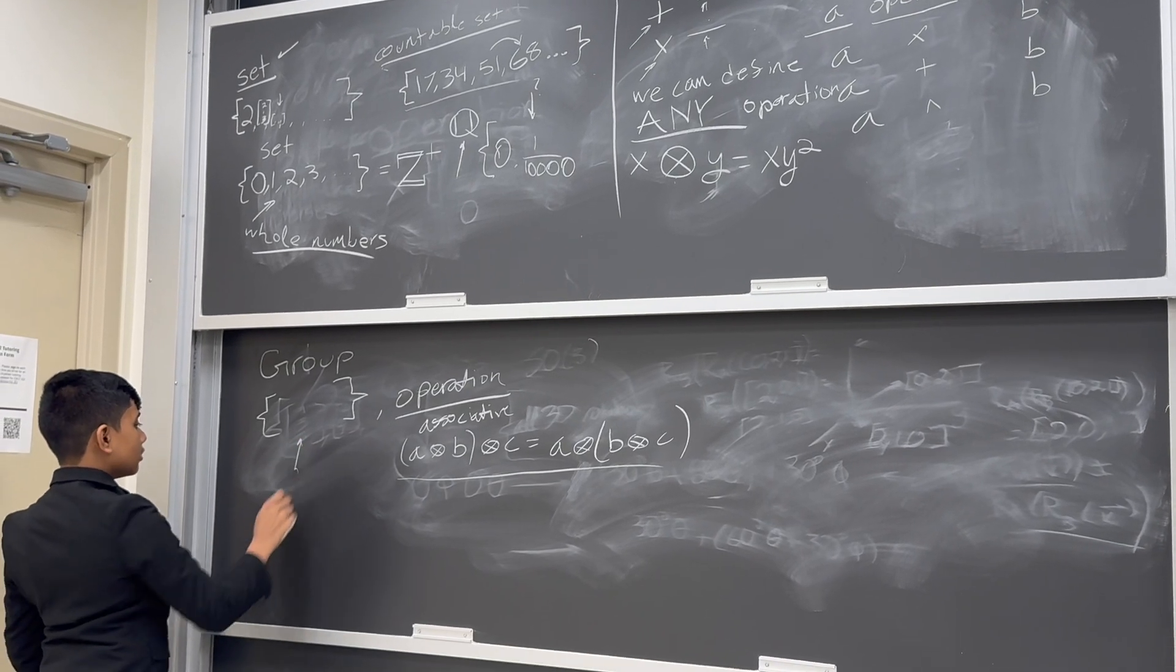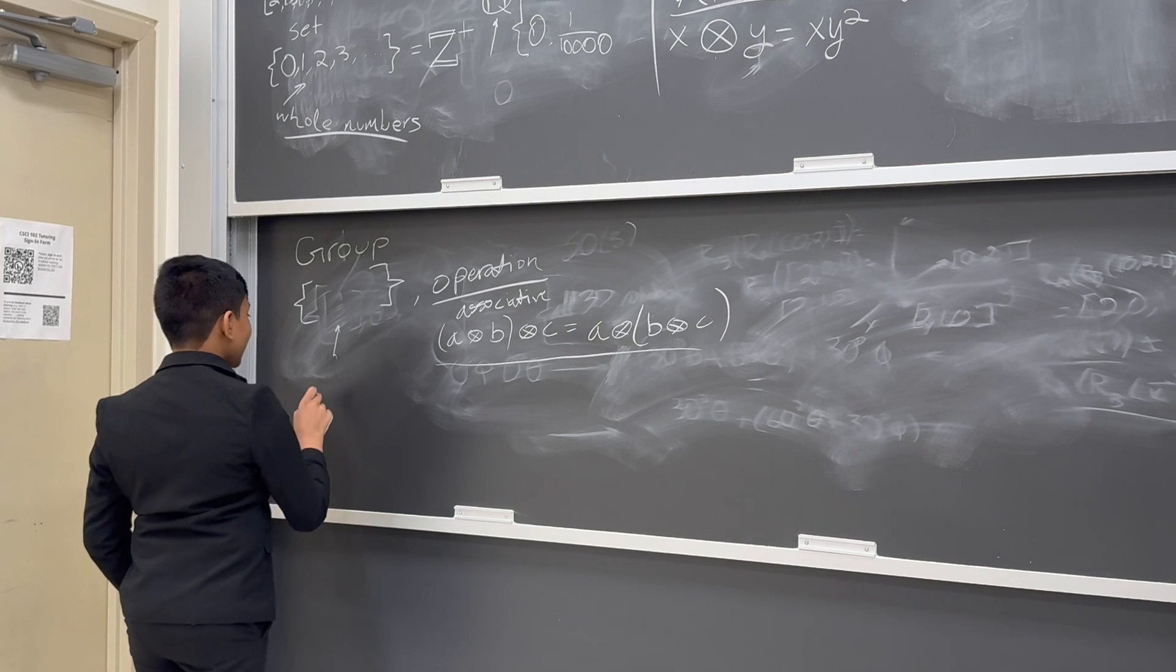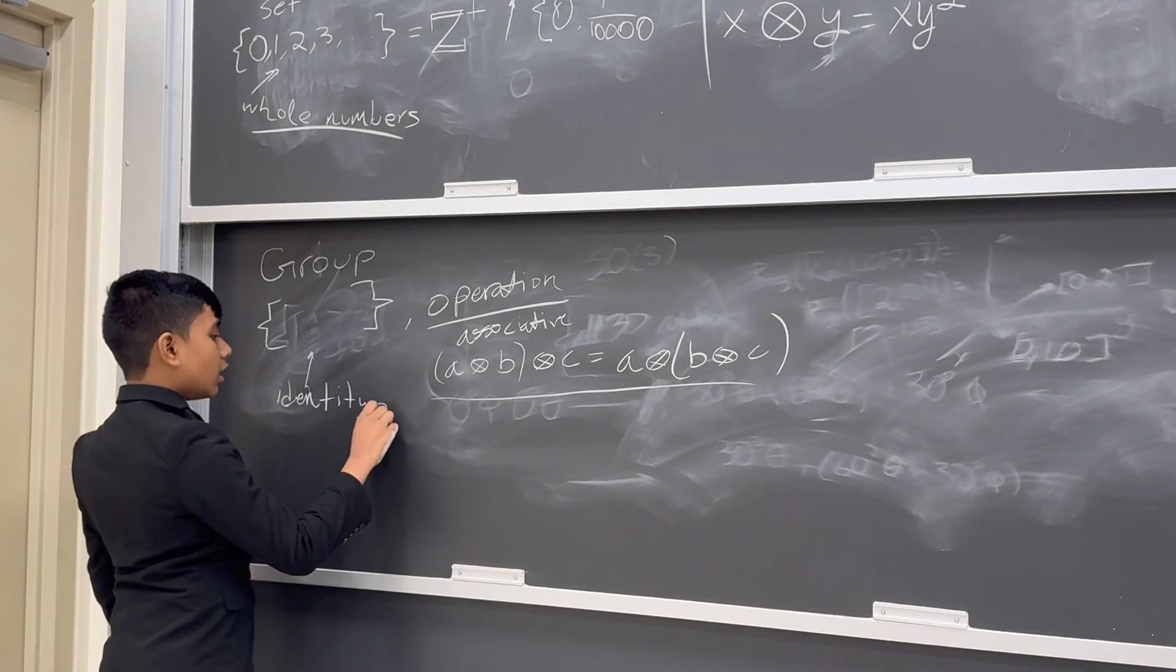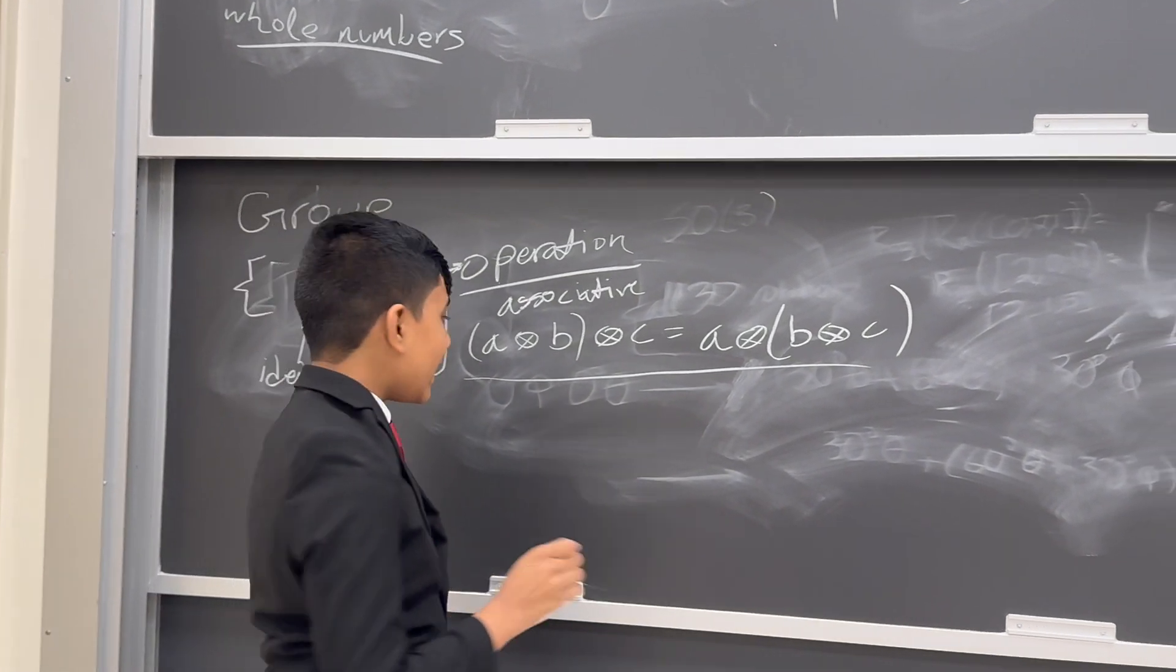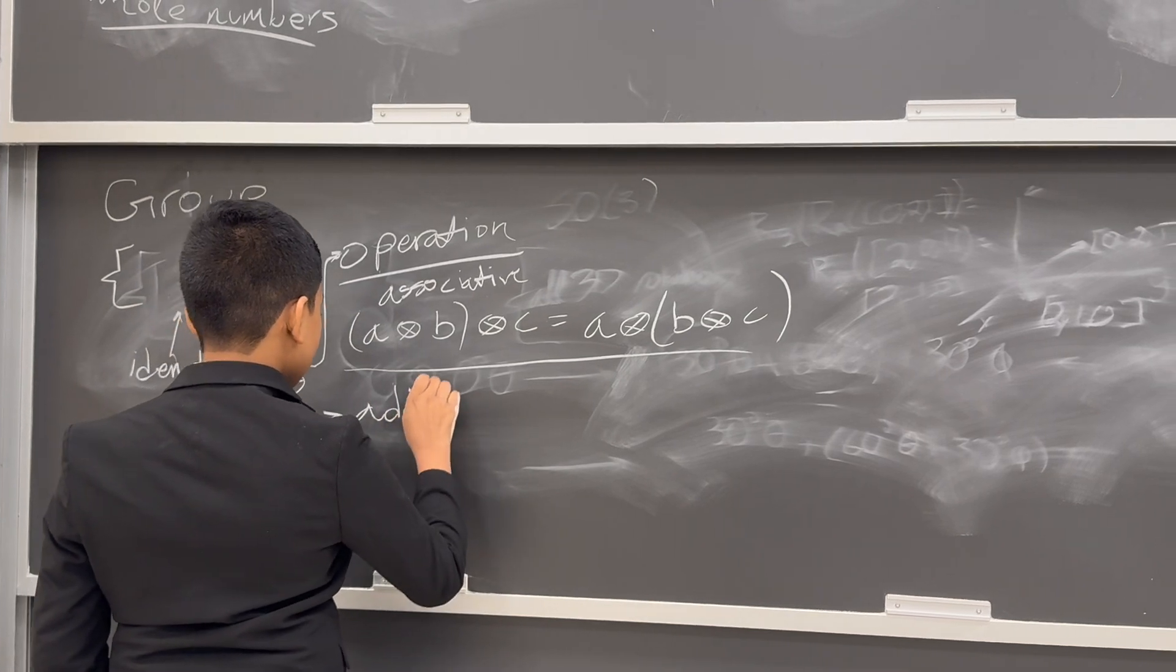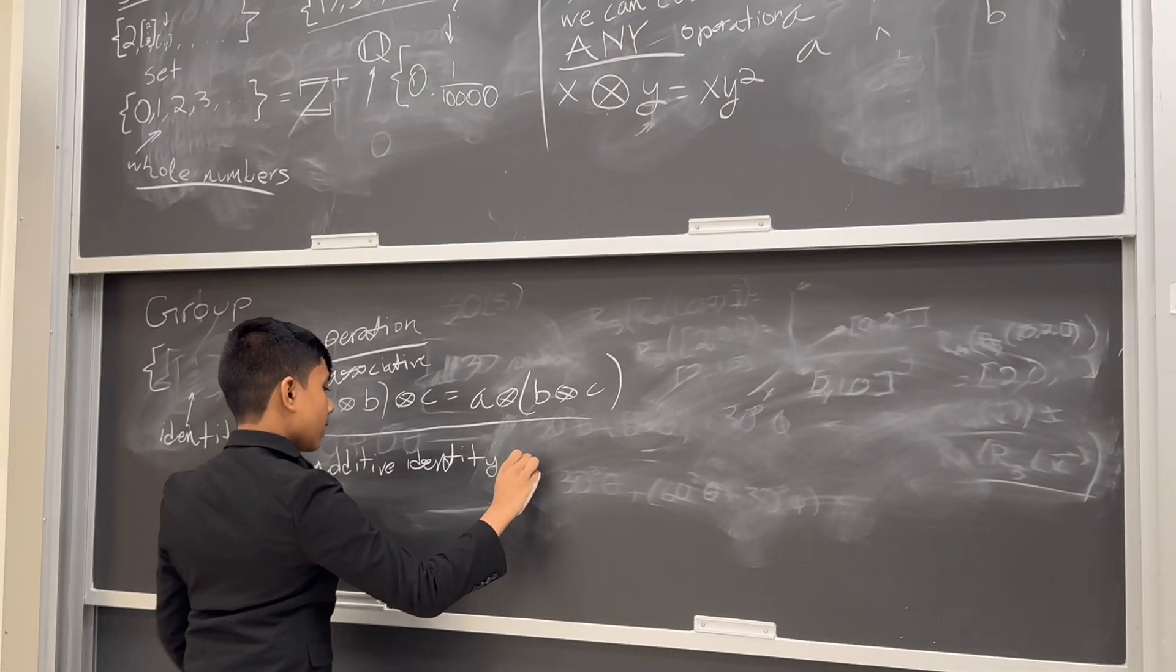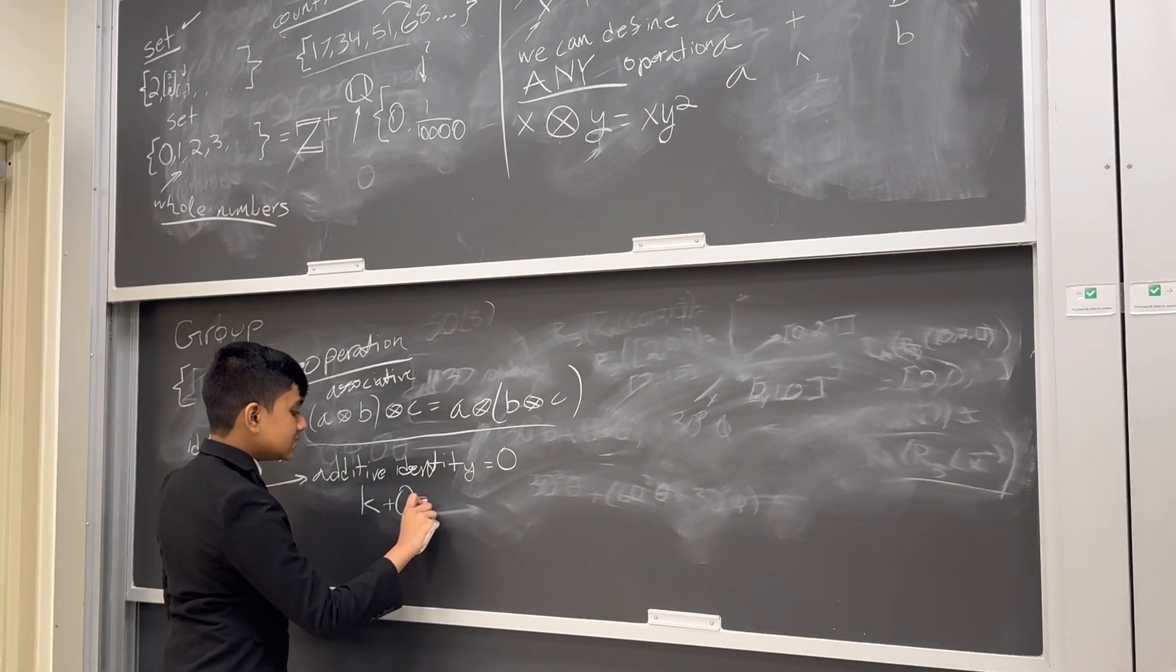Now, what about the conditions for the set? Well, for the set, it must contain the identity, and an identity must exist in the first place, of this operation. So, for example, an additive identity is 0, because any number plus 0 is itself.